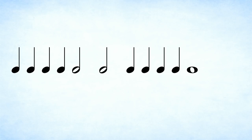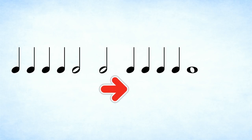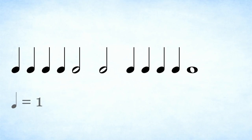Let's give it a go. Here's an example rhythm. Just like reading English, we read music left to right. So we start with the note on the left, and the notes on the right come after. How would you count it? Remember to count one beat for the crotchets, two beats for the minims, and four beats for the semibreves.